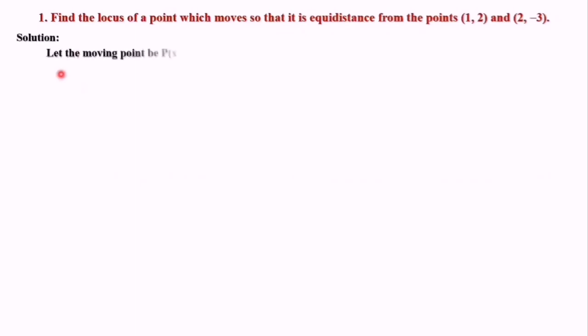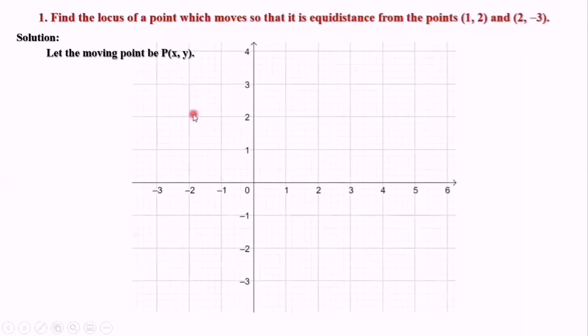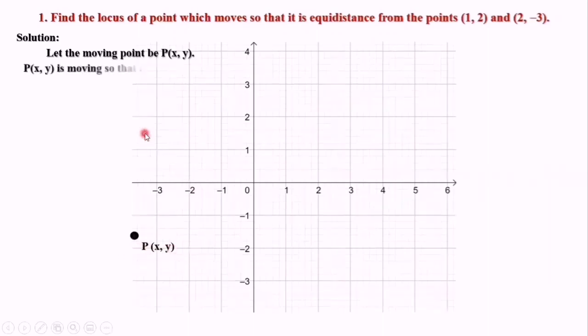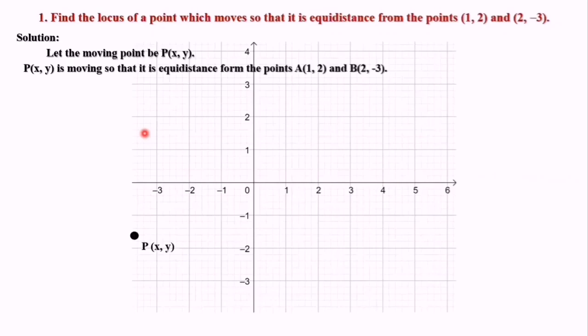Number one: find the locus of a point which moves so that it is equidistant from the points (1, 2) and (2, -3). The question is talking about locus, so we need a moving point. We suppose the moving point as P(x, y). P is moving and the geometrical condition is that P(x, y) is equidistant from point A(1, 2) and B(2, -3).